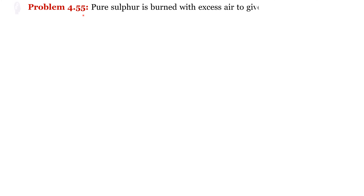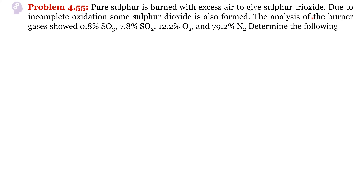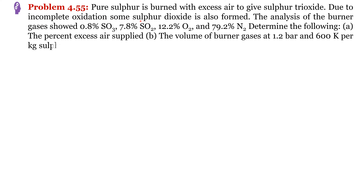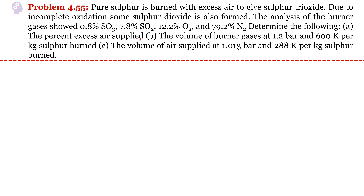Problem 4.55: Pure sulfur is burned with excess air to give sulfur trioxide. Due to incomplete oxidation, some sulfur dioxide is also formed, meaning there are two types of reactions — one desired and one undesired. The analysis of the burner gases showed certain percentages of SO3, SO2, O2, and nitrogen. Find the percent excess air supplied and the volume of burner gases at particular temperature and pressure conditions.